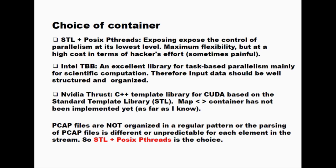The third option is the emerging technology of Thrust. Thrust is a C++ template library for GPU. By using Thrust, you can write code to perform reduce, scan, and similar operations accelerated by GPU. But unfortunately, as far as I know, there's no plan to implement hash tables, maps, and associated containers in GPU. So I guess it will be some time before it becomes common for packet inspection — this could be a future work.